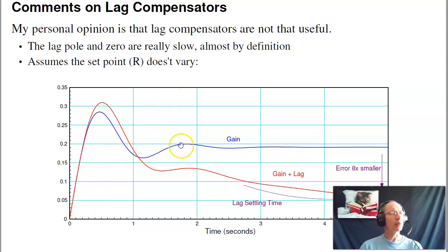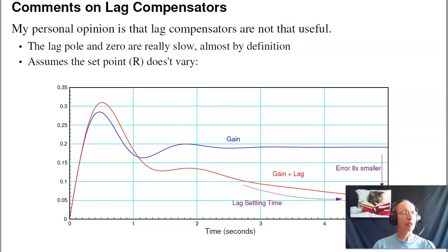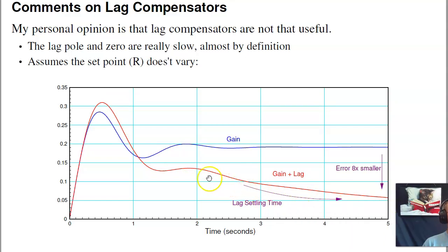If you take the ramp, I've got a type 1 system, no steady state error for step input. So let's apply a ramp input. If you look at the steady state error for ramp input, the steady state error is a constant. That's your 1 over kV. If I do the gain compensator, the steady state error is right around 0.18. If I have the lag compensator, the steady state error is 8 times smaller. So that's good.